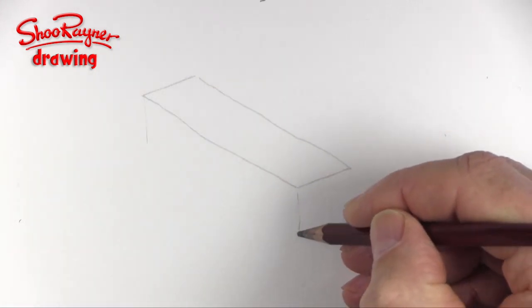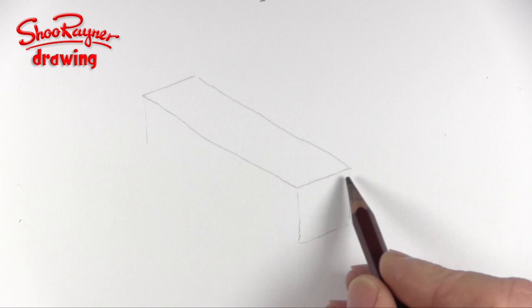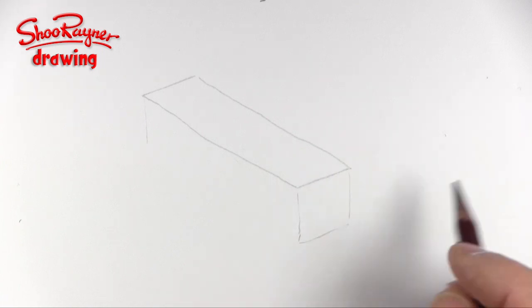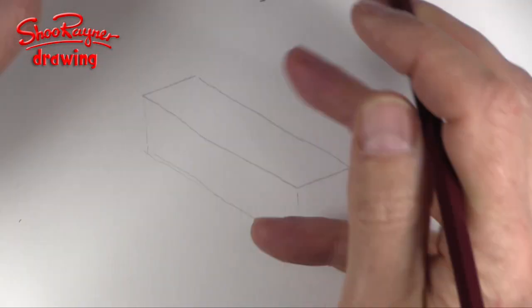If this was a box then these lines would be going straight down and we'd be making a cube shape, and then we'd be joining that one up there as well like that.